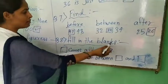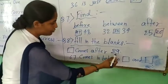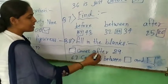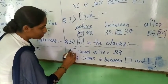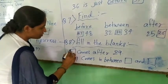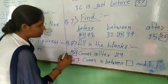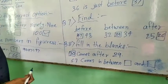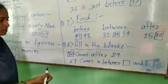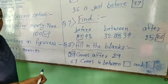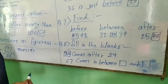Fill in the blanks. Next question, fill in the blanks. Comes after 29. What comes after 29? 29, then 30. 30. Sorry, 30.